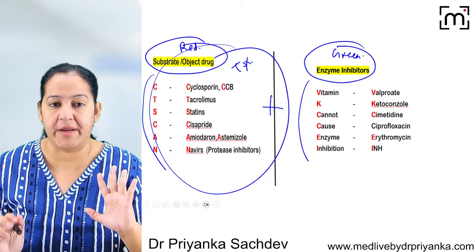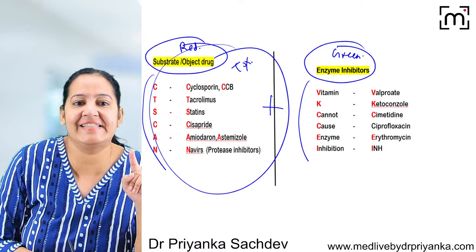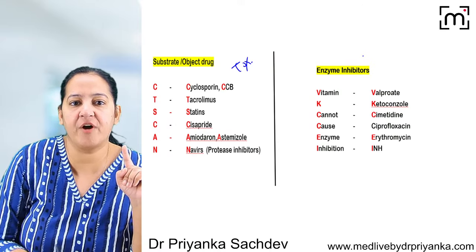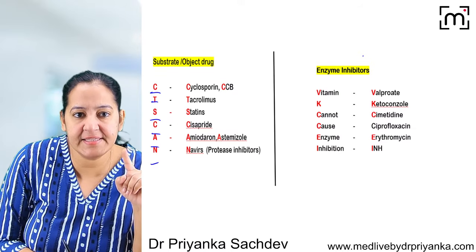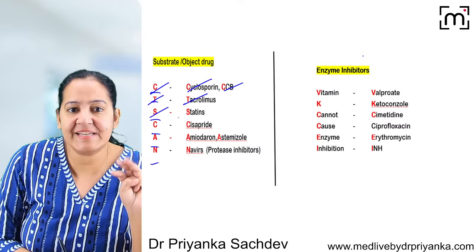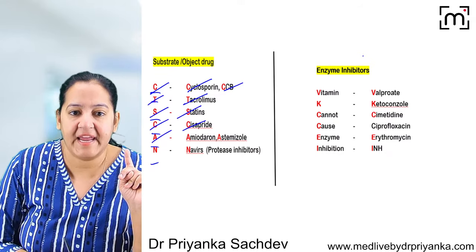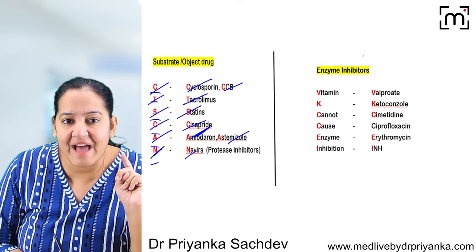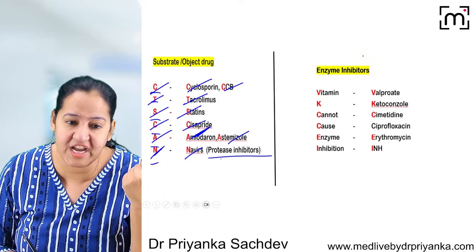The mnemonic for substrate drugs (red) is CT scan: C = cyclosporin or calcium channel blocker (CCB), T = tacrolimus, S = statin, C = cisapride, A = amiodarone or astemizole, N = NNRTIs (anti-HIV drugs, protease inhibitors).